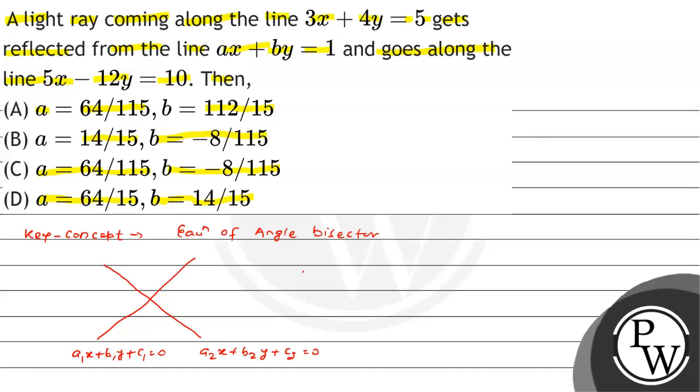then the angle bisector will be (a1x plus b1y plus c1) by square root of (a1 square plus b1 square)